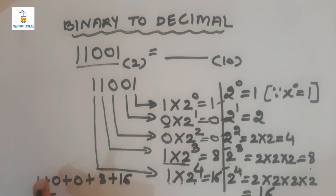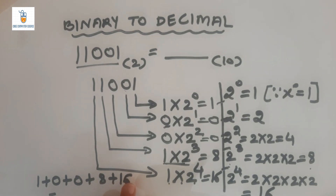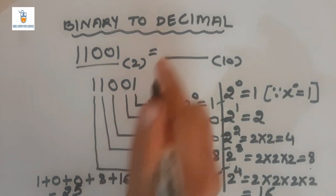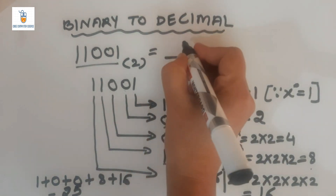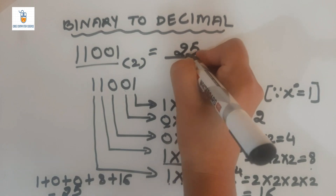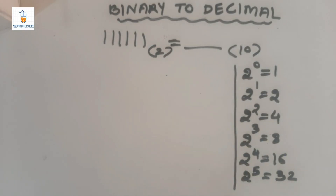Therefore, 11001 to the base 2 is equal to 25 to the base 10. Now let us take another example.